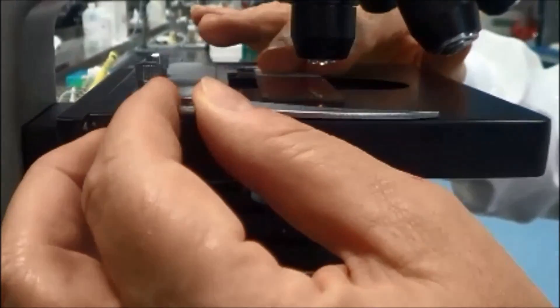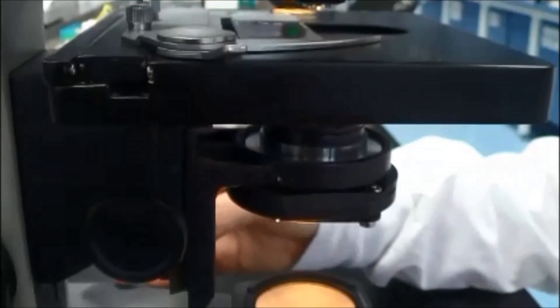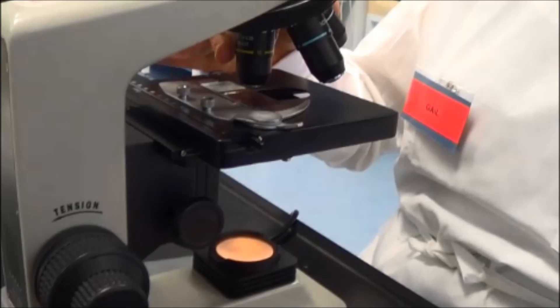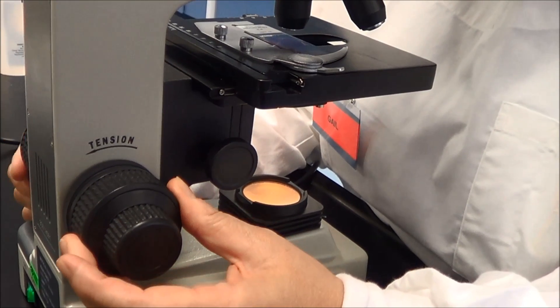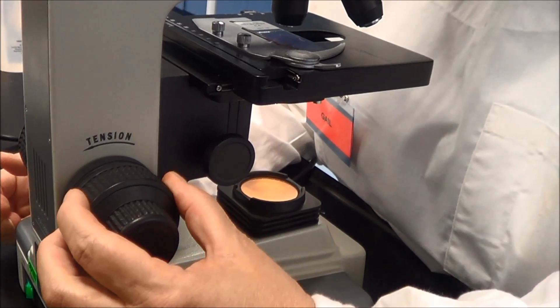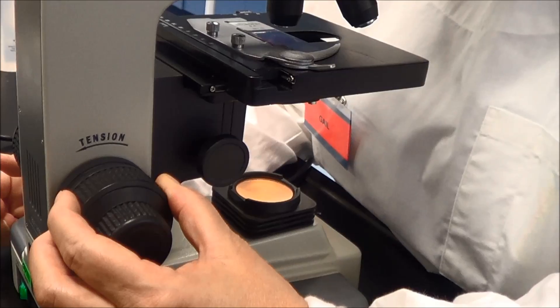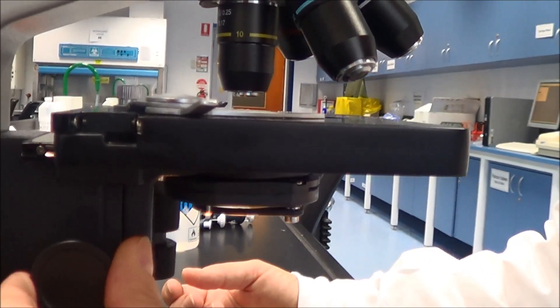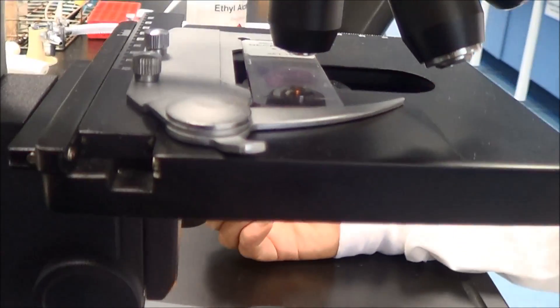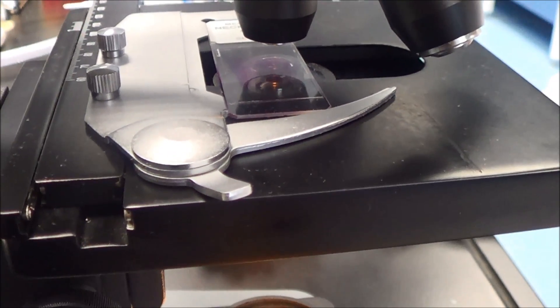Load the slide onto the stage holding it in place with the stage clip. Turn the nosepiece until the 10x objective is directly above the stage. Bring the stage up to a maximum height by winding the coarse focusing control clockwise until it reaches a stop. Use the condenser adjustment knob on the left hand side of the microscope to move the condenser to the uppermost position.